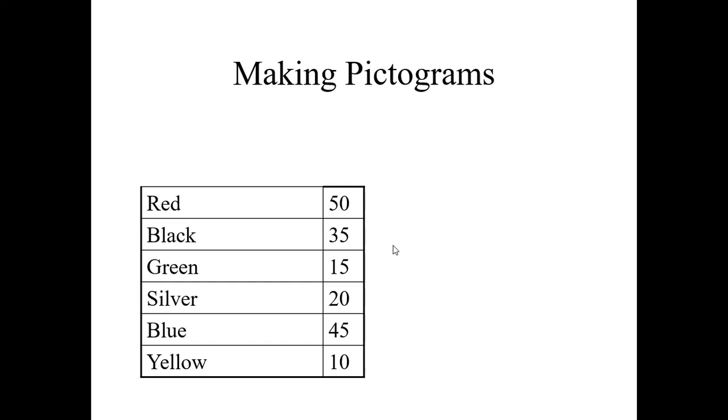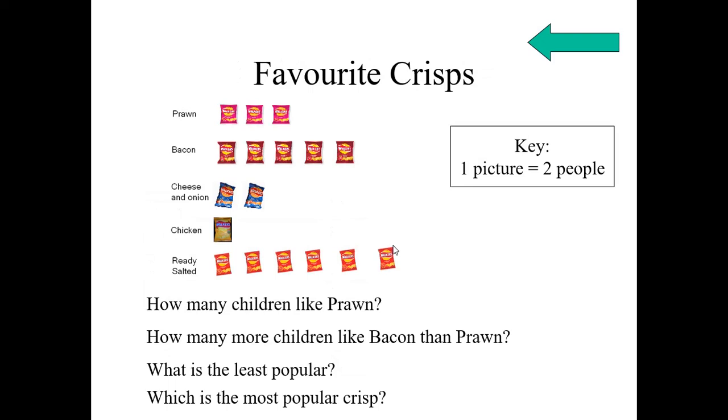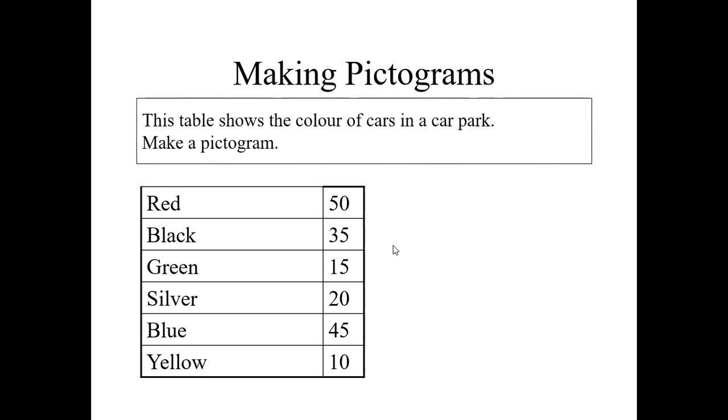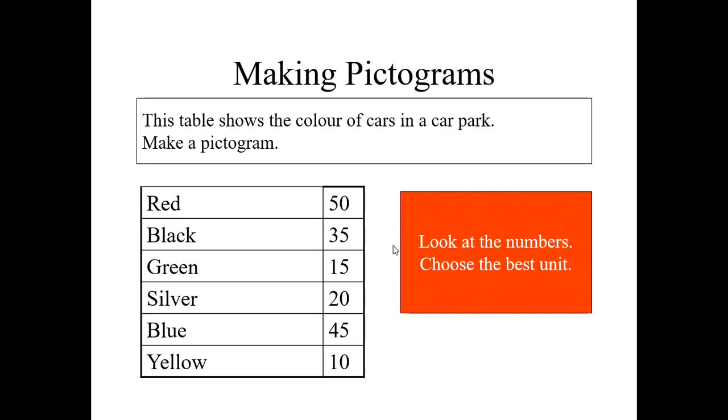And let us make some pictograms with the help of data. Up to now, we read the pictures. Let us draw the pictures. Now, red 50, black 35. These are the data of color of cars. Let us draw some pictures based on this data. Look at the numbers. Choose the best unit. Here, one picture we can take 5 cars or 2 cars or 10 cars. Now, I am taking 10 cars.